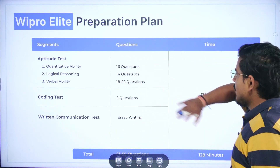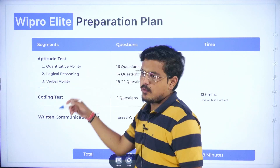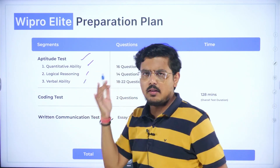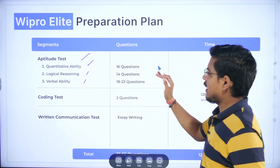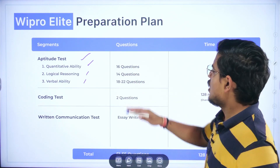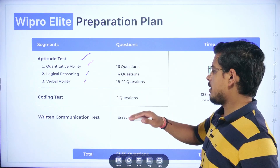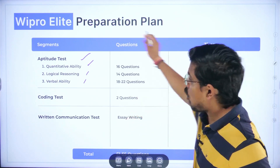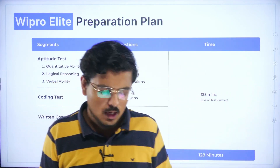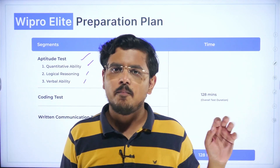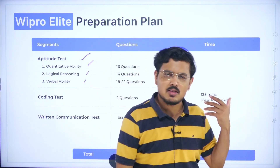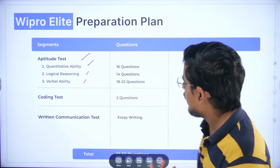The basic skeleton: aptitude test has three sections — quantitative ability, logical reasoning, and verbal ability — with 16, 14, and 18 to 22 questions in respective sections. There is also a coding test with two questions and a written communication test with essay writing. This is all about the online assessment, which generally happens for 128 minutes. It is the online assessment that makes or breaks your chances initially — it is the gatekeeper you have to clear. To clear it well, you have to perform well in quantitative ability.